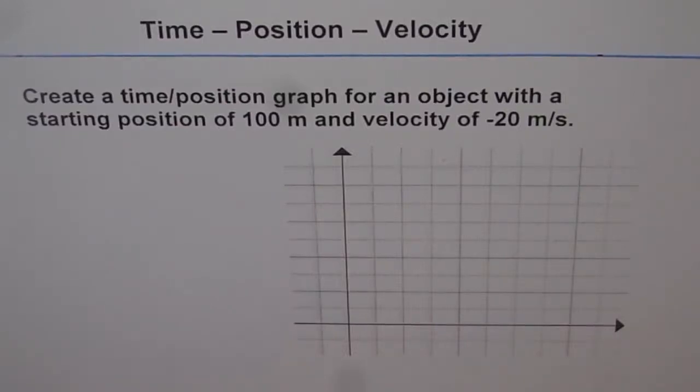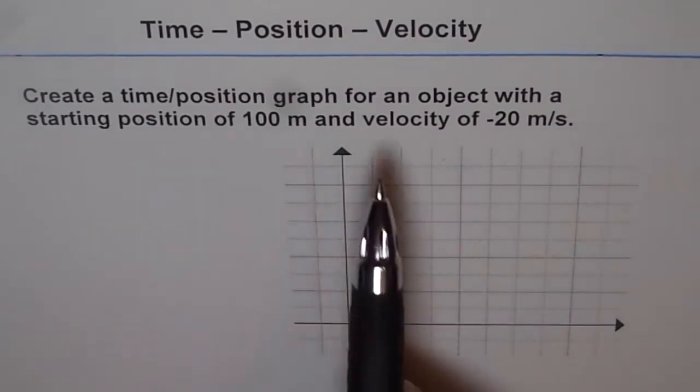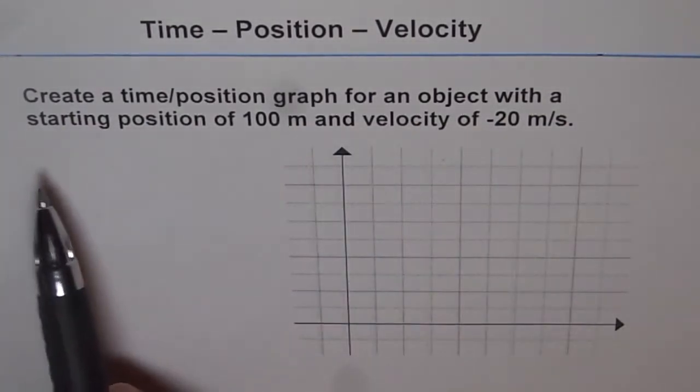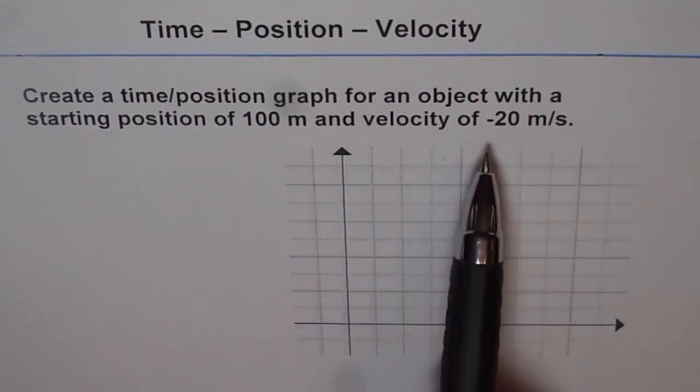Time position velocity. Now we are given a description and we need to draw a time position graph. Create a time position graph for an object with a starting position of 100 meters and velocity of minus 20 meters per second.